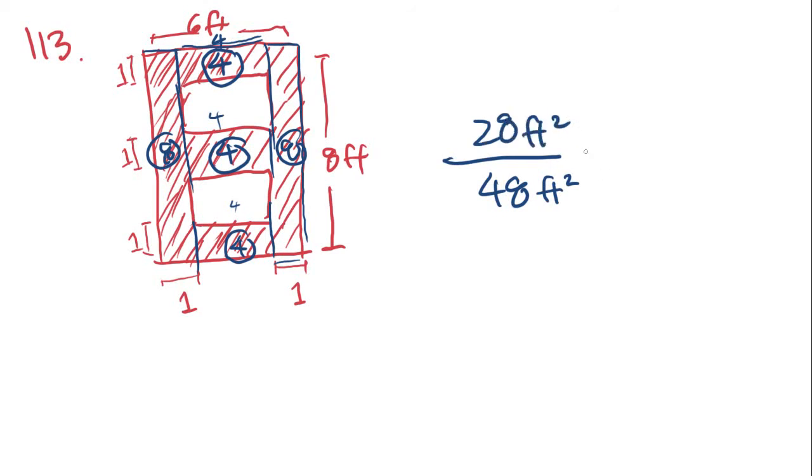And then this can be simplified to 7 over 12. 7 over 12 is answer choice D.